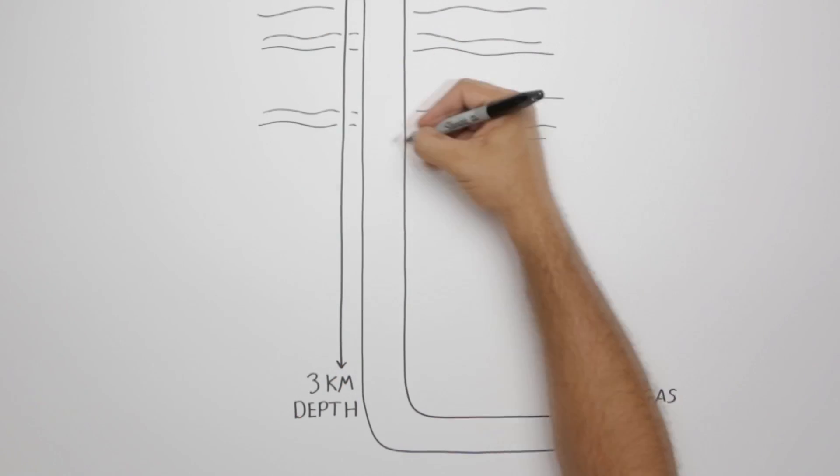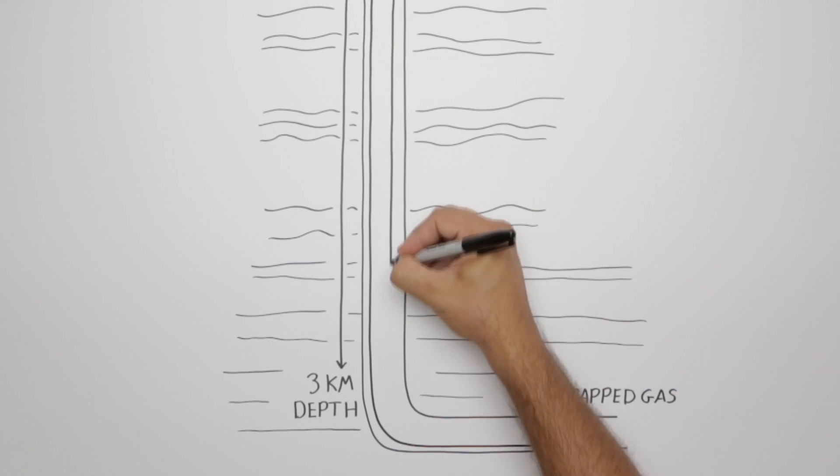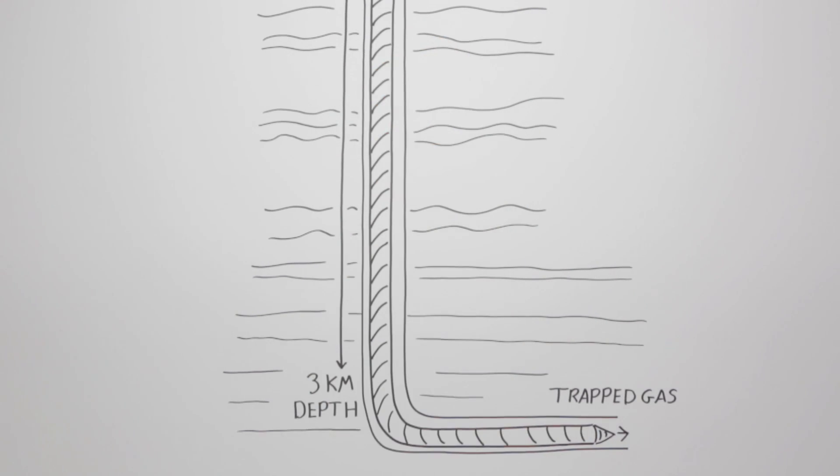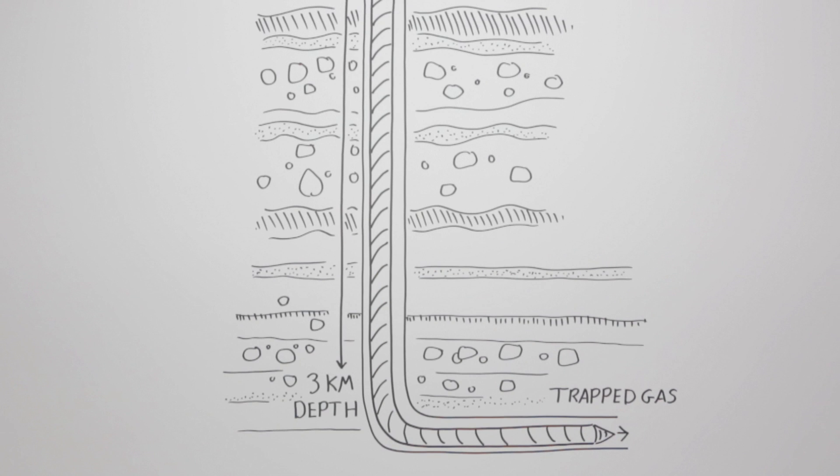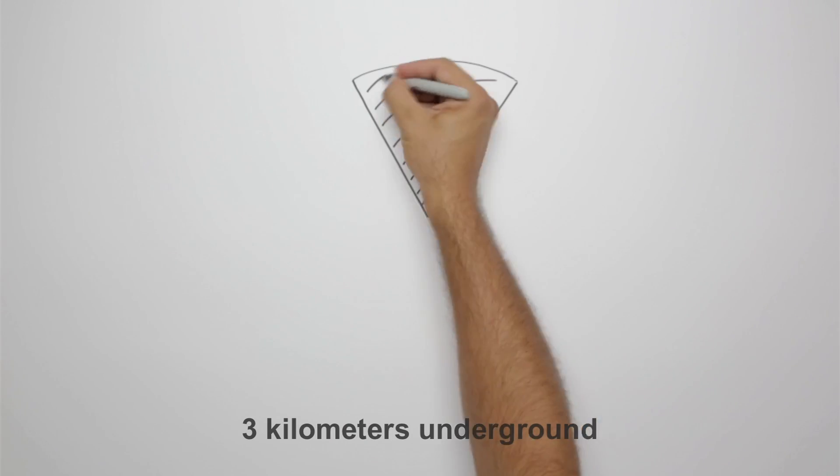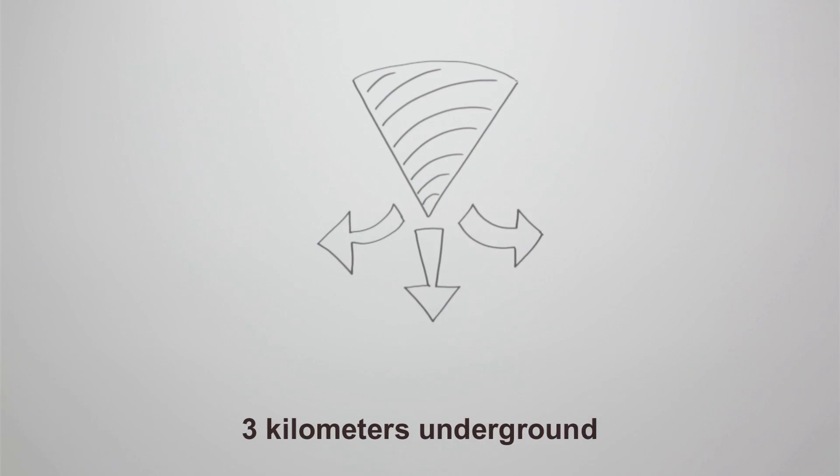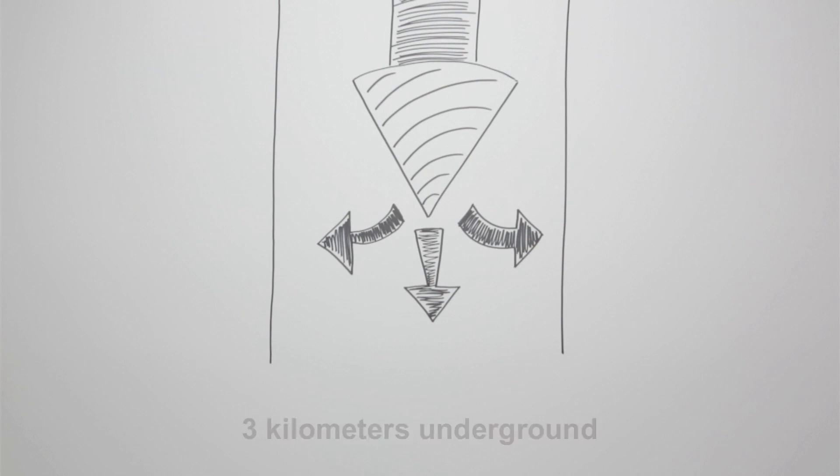Fracking works by drilling as far as 3 kilometers underground, and then turning a drill horizontally so it can keep drilling along the horizontal layers of rock where the gas is trapped. The drill can even be turned in several different directions, so that only one hole needs to be drilled on the surface to reach numerous areas underground.